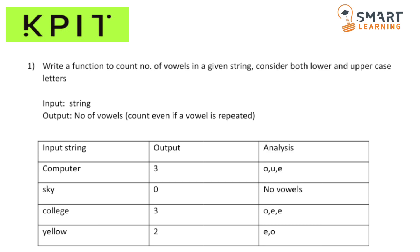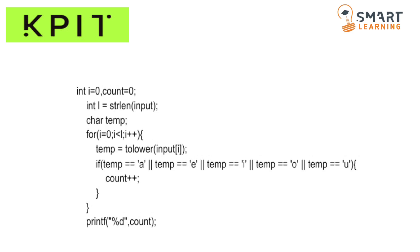These are all the constraints for the program, and this is the code. First of all, we have to calculate the length of the string because we have to iterate through each character in the string. After that we take one for loop for iteration. Then I am converting the entire string into lowercase because there is a constraint that we have to consider both uppercase and lowercase.